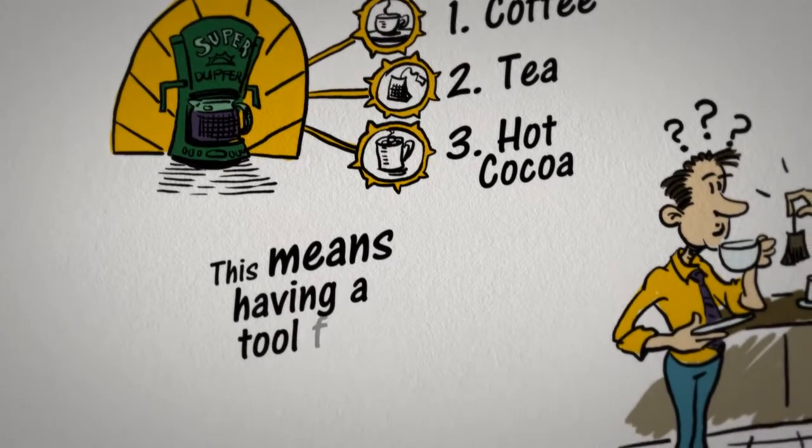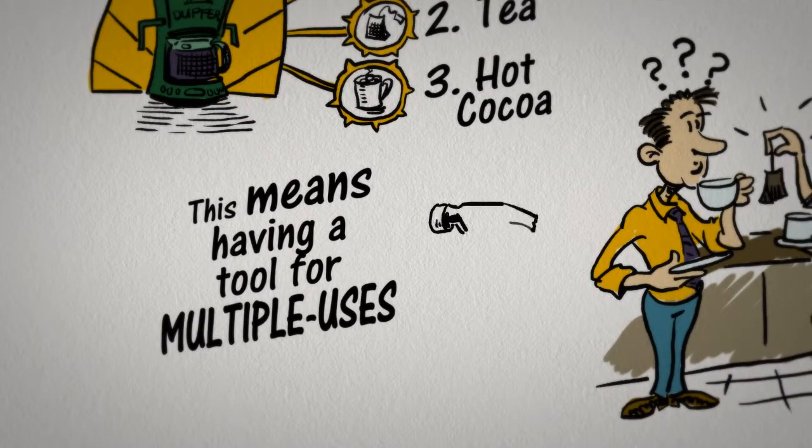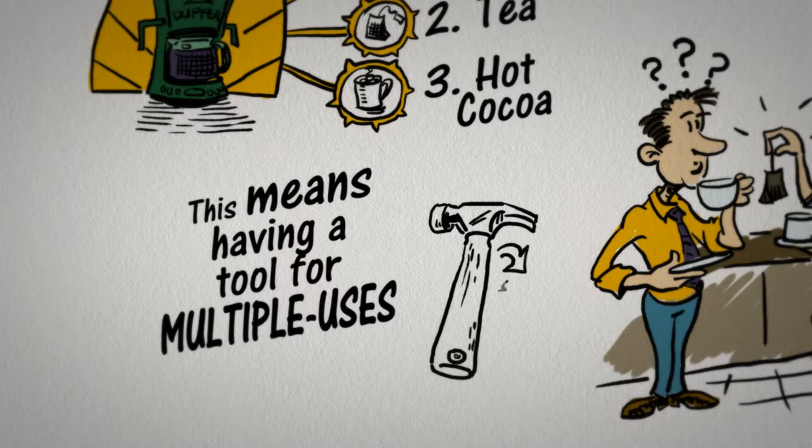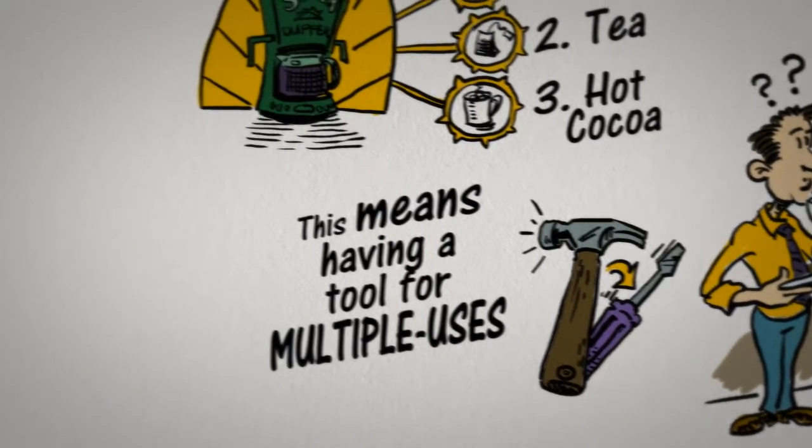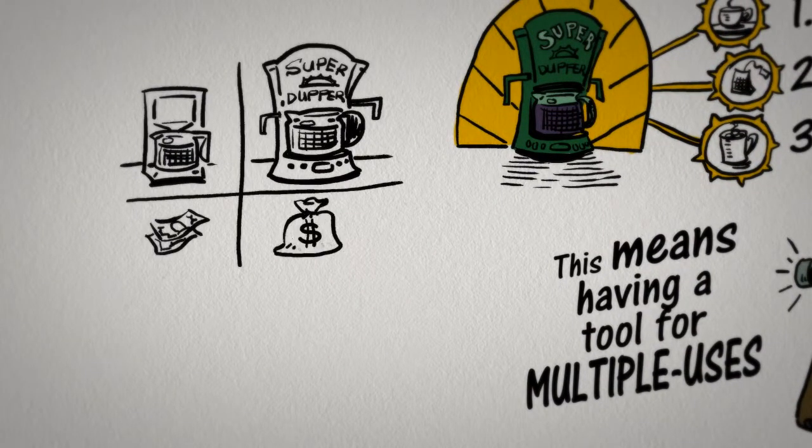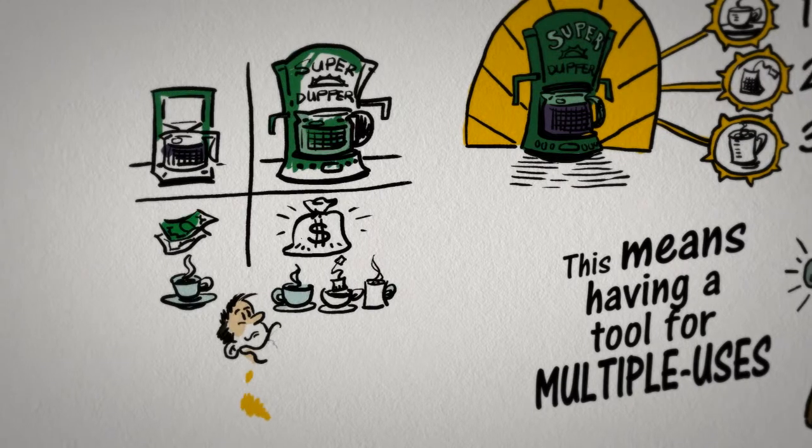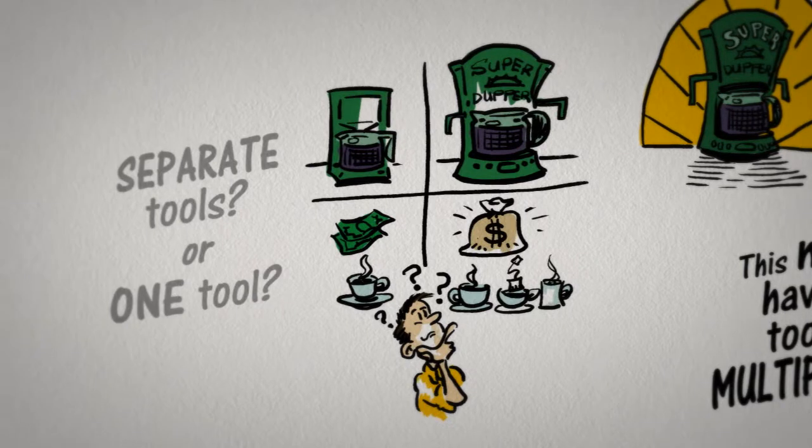This means having a tool for multiple uses, which are inherently compromised. A tool that functions both as a hammer and a screwdriver will neither be a good hammer nor good screwdriver. In the case of the coffee maker, gourmet coffee makers are generally more expensive and limited to single cups. So what will it be? Separate tools for each duty, or one tool to perform them all?